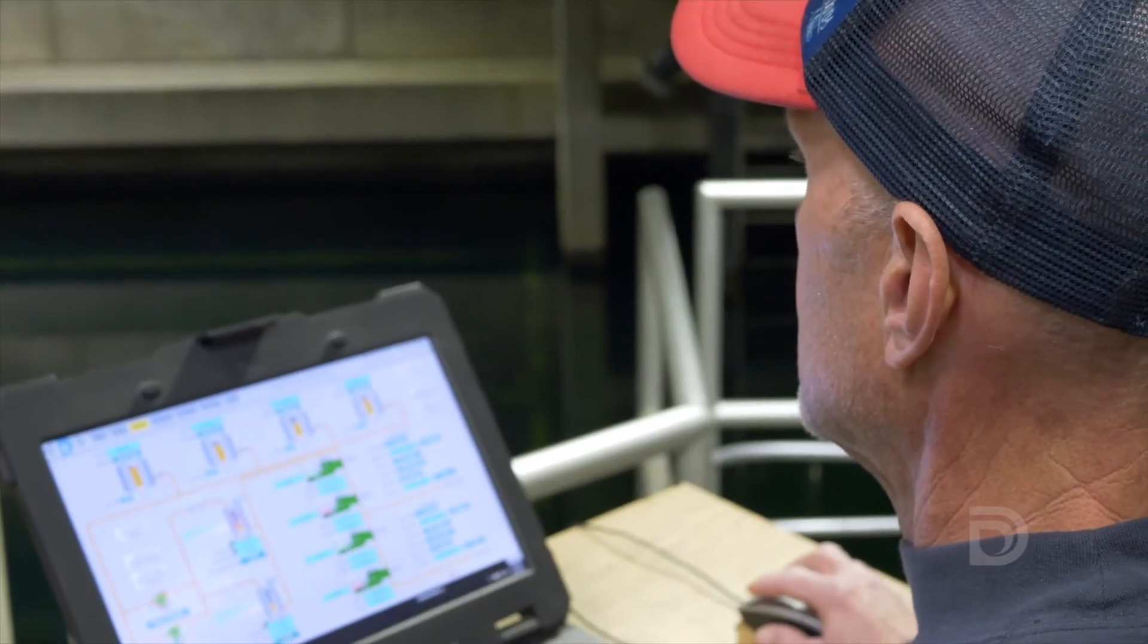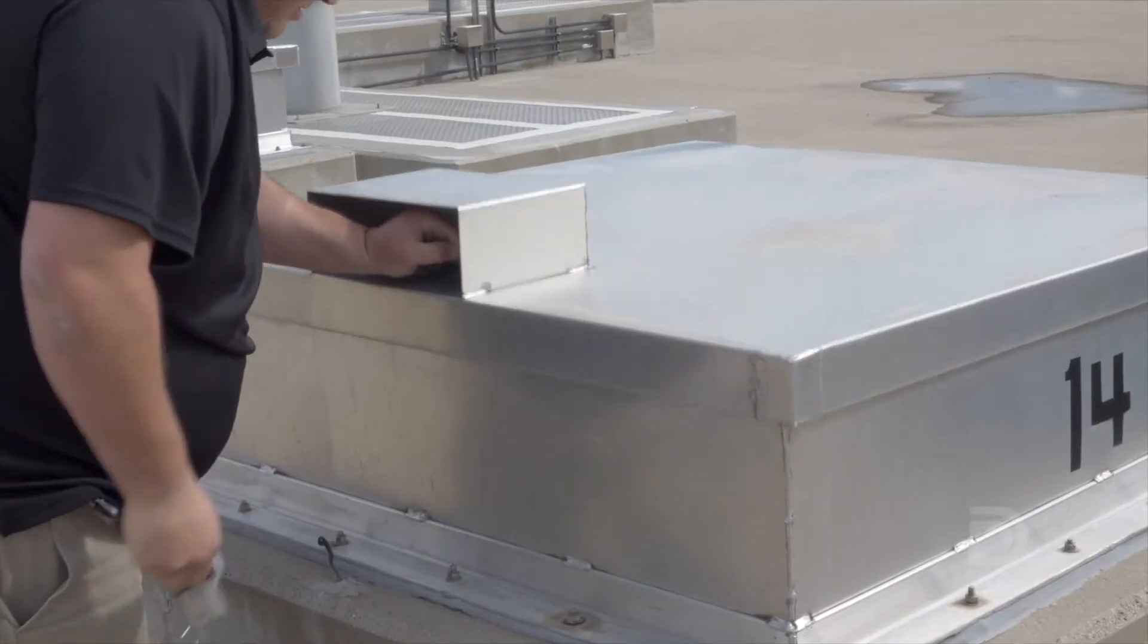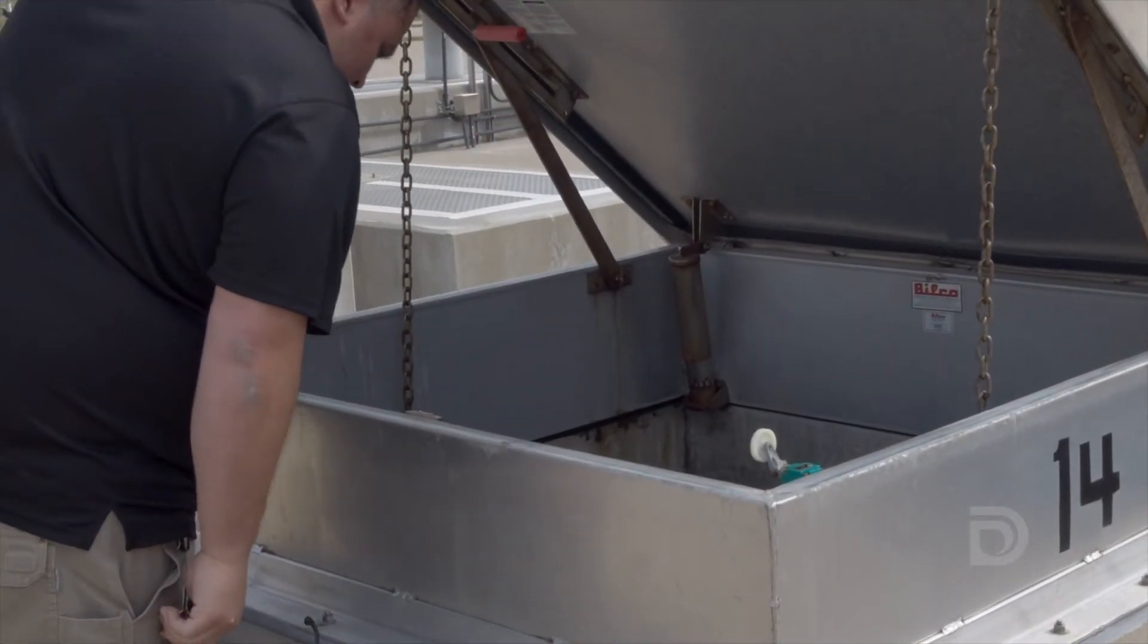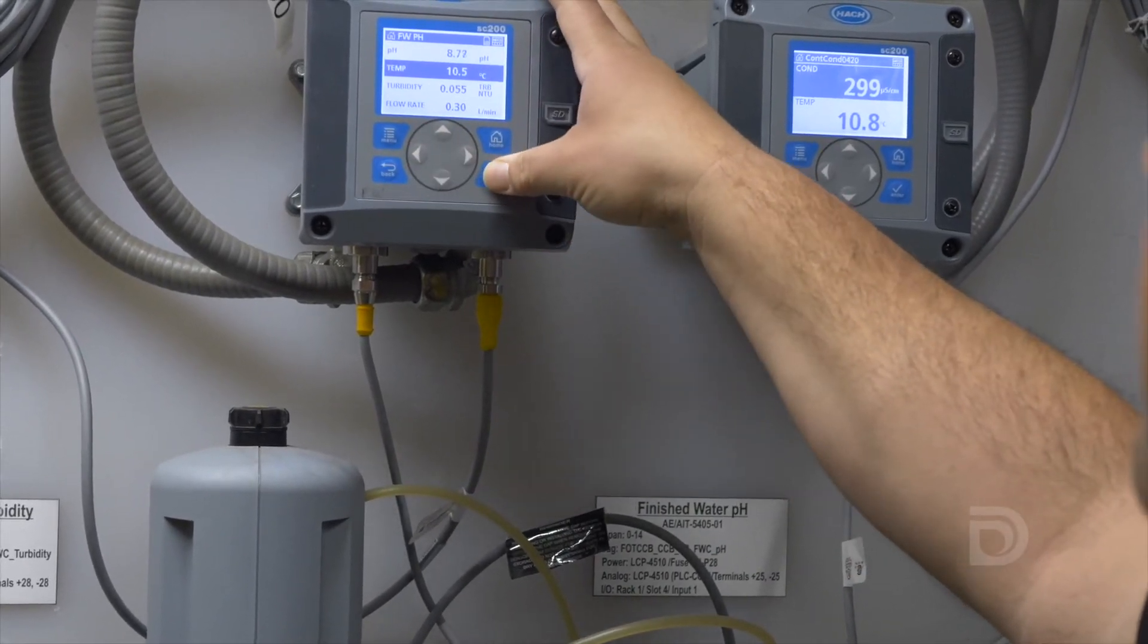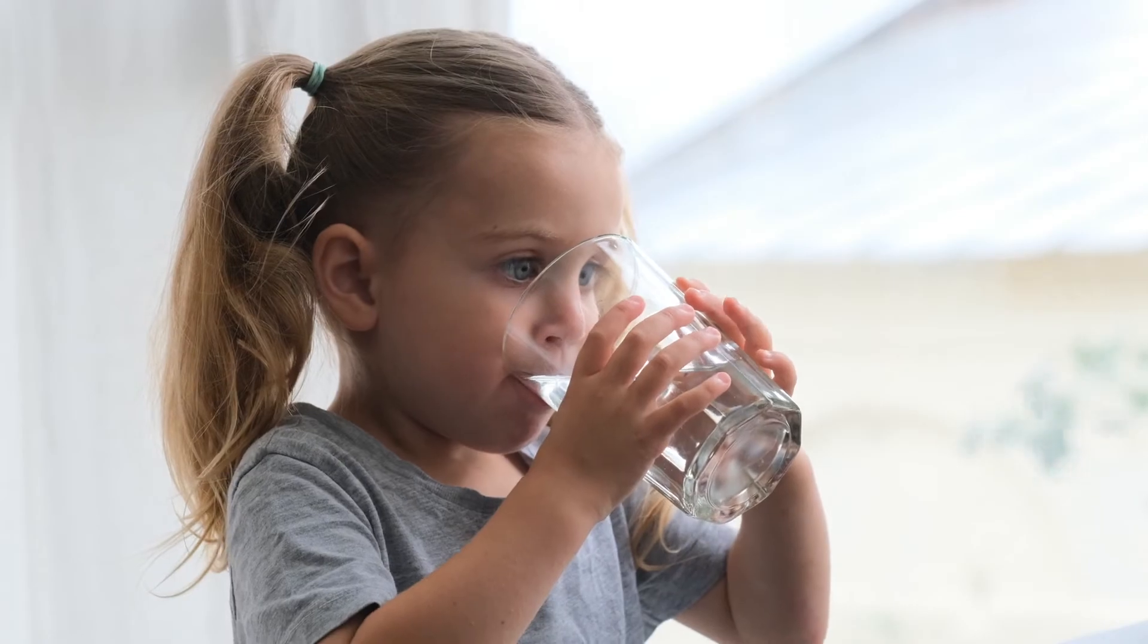We get these readings from probes that sample the water as it travels through the treatment plant. Adjusting pH is a safe and common technique used in the water treatment industry, and we do all of this to protect our customers from health risks linked to lead pipes.